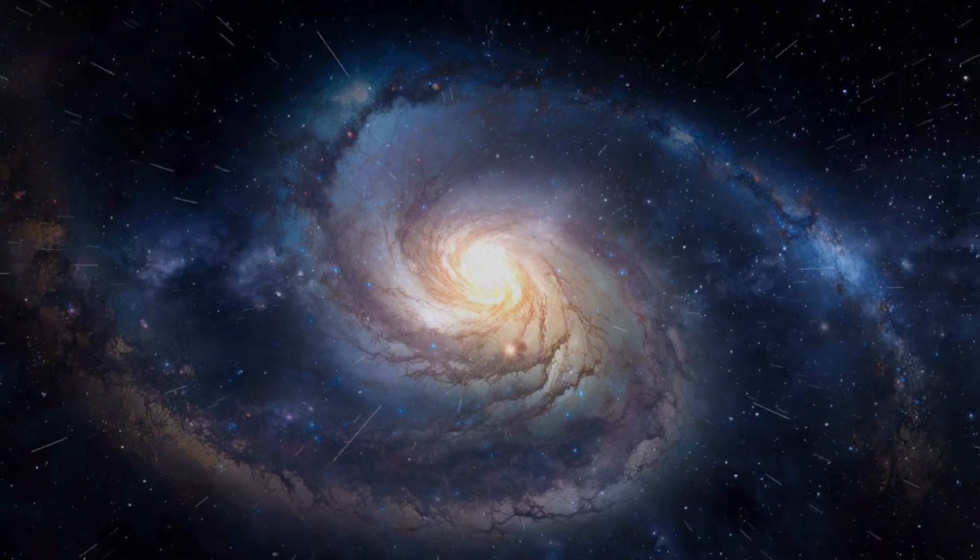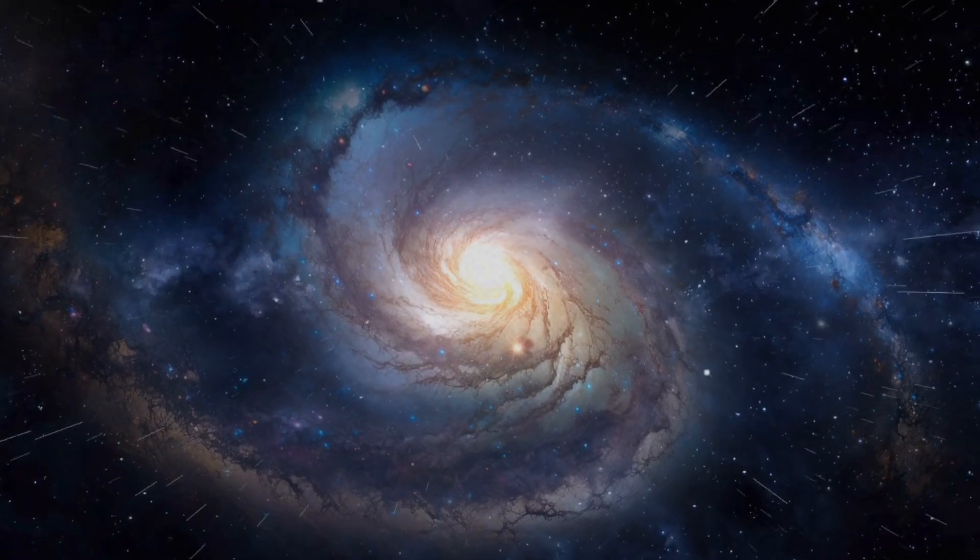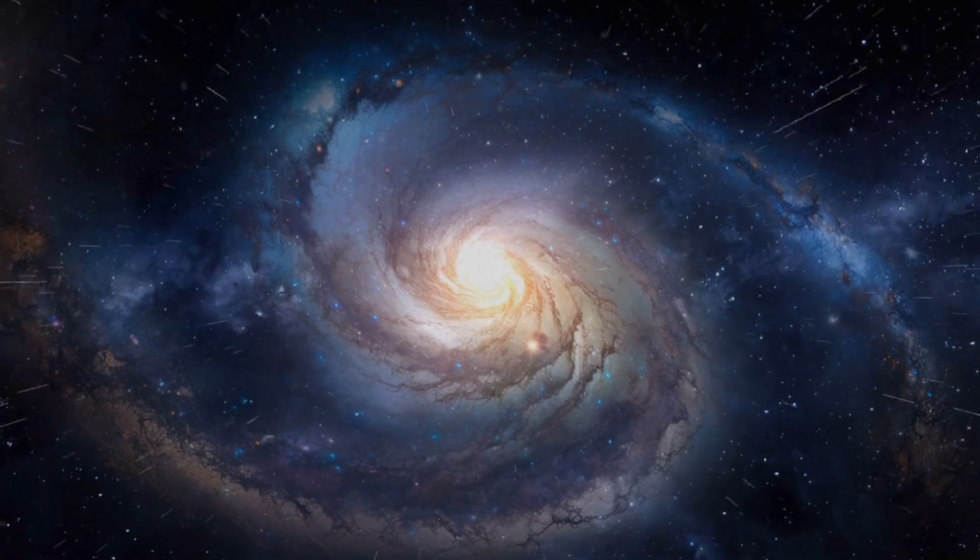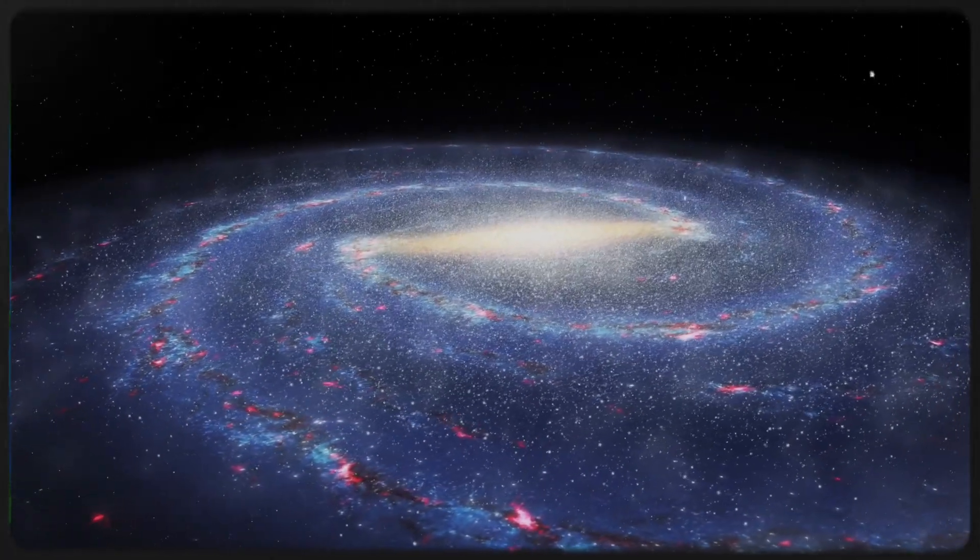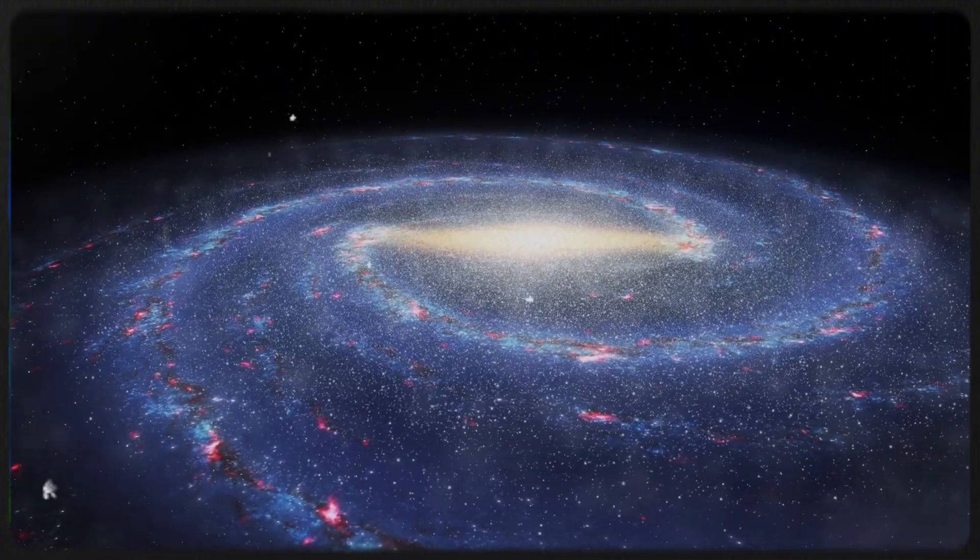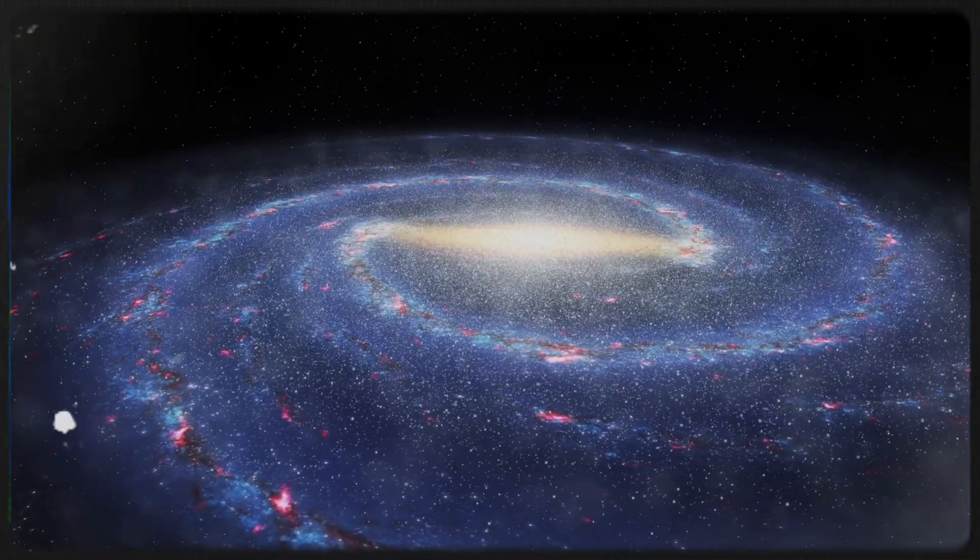Hubble's visible light images of M74, also known as the Ghost Galaxy, reveal its stunning spiral structure with arms radiating from a bright core. Webb's infrared images show intricate structures resembling threads of dust and gas emitting heat from a central bright blue region, highlighting areas where new stars are forming.